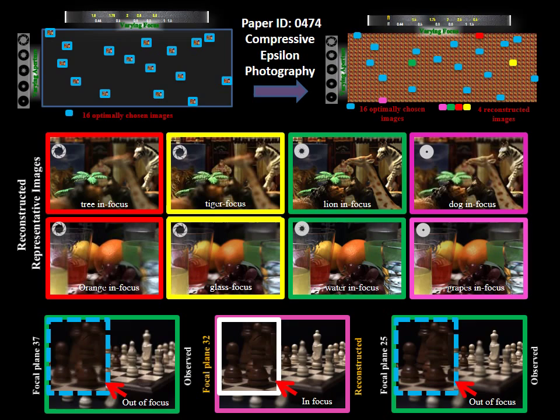In summary, compressive epsilon photography exploits the inherent redundancy manifest when varying camera parameters. By modeling and taking advantage of this, it enables unprecedented post-capture control of camera focus and aperture settings.